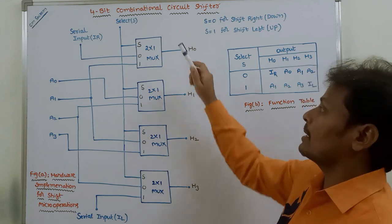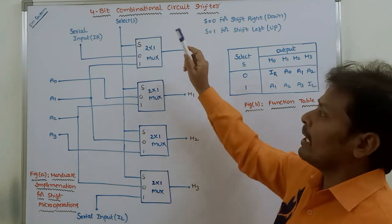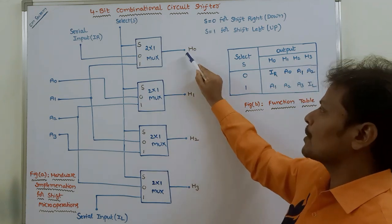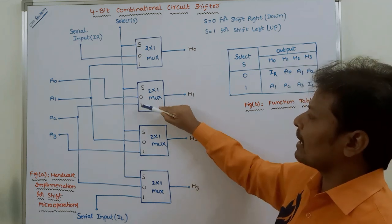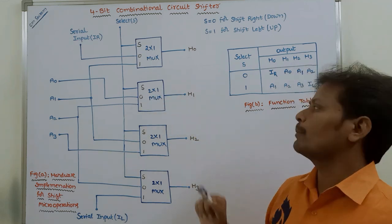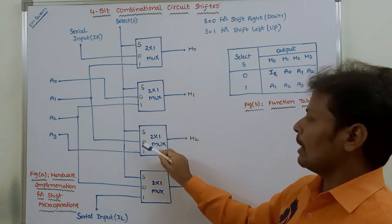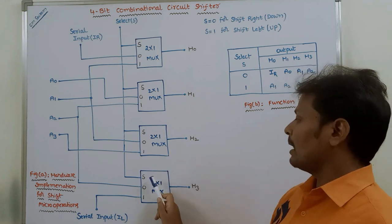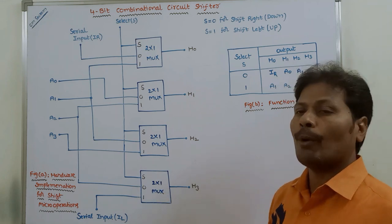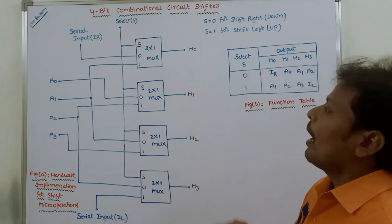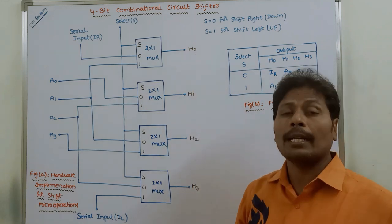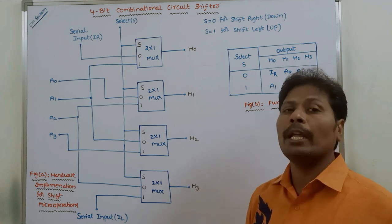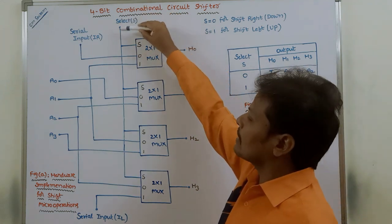Each multiplexer has a size 2-by-1, meaning each multiplexer can take 2 data inputs — input 0 and input 1 — and produce 1 output: H0, H1, or H2 respectively. Among those 2 data inputs, we are selecting only 1 data input at a time. For that purpose, we require only 1 selection input line, called the selection input line.